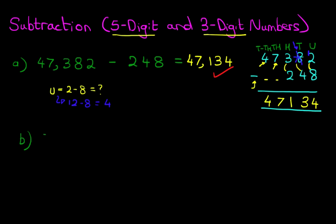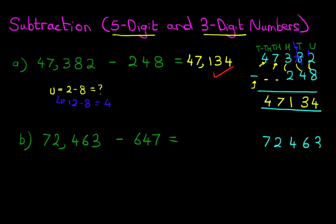Okay, let's have a look at another one. This time we've got seventy-two thousand four hundred and sixty-three minus six hundred and forty-seven. So the first step is to rewrite the question in nice neat columns: seventy-two thousand four hundred and sixty-three minus six hundred and forty-seven.